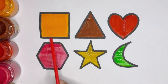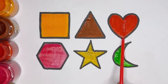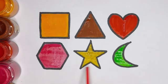Orange color square, brown color triangle, red color heart, pink color hexagon, golden color star, light green color moon.